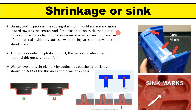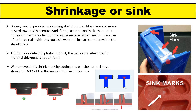Let's discuss the shrinkage or the sink mark on the plastic part first. After manufacturing of the product, you can see a dimple-like shape on the part, or some stretching inside the part. This defect generally occurs on most plastic parts. These defects generally do not affect the performance or strength of the plastic part, but aesthetically these defects are not allowable.